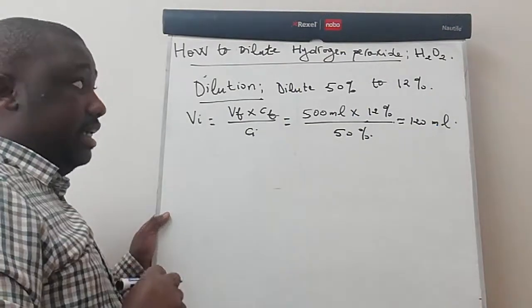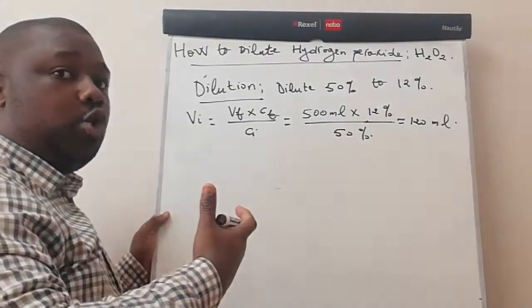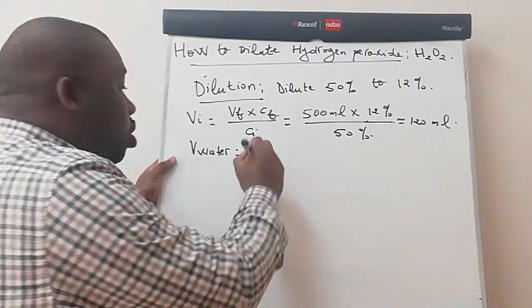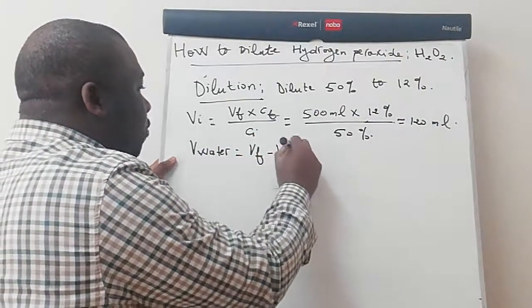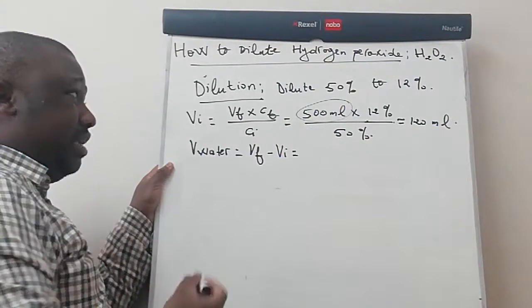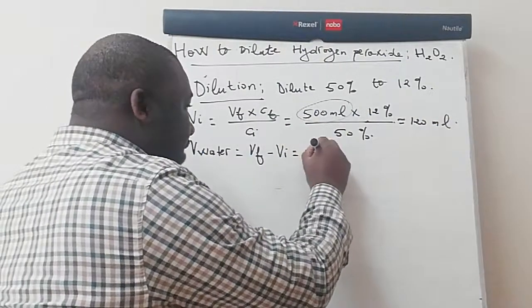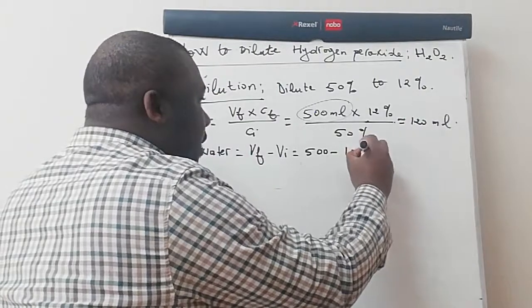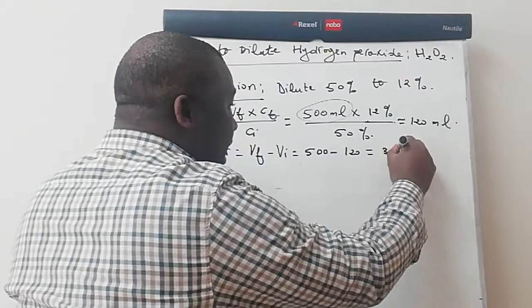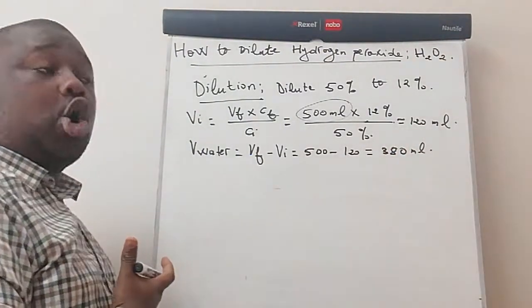Then remember that it's a dilution. We also need to find out the amount of volume of water. For you to find the volume of water, you know what to do. We do our final volume minus the initial volume. Our final volume is what we want to obtain. Let's say we want to obtain 500 ml of 12% hydrogen peroxide. So we do 500 ml minus 120 ml. This will give us 380 ml. Then from here, you can actually make your conclusion.